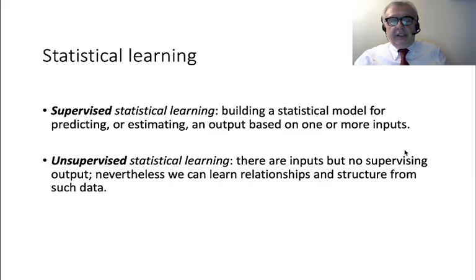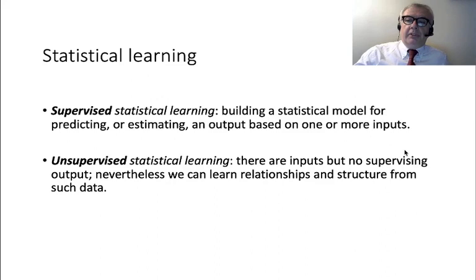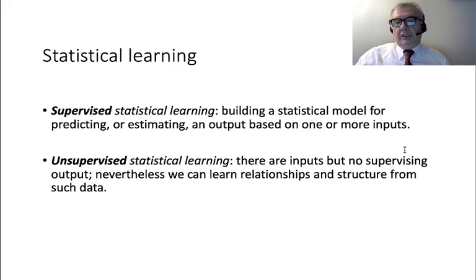I'll end this first lecture with the definition of statistical learning. We have two kinds: supervised statistical learning, which regards the case when you are building a statistical model for predicting or estimating an output based on one or more inputs. The main feature is that you have an output, so you judge the quality of your model on its ability to predict that output.